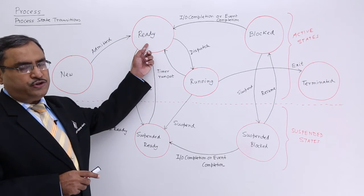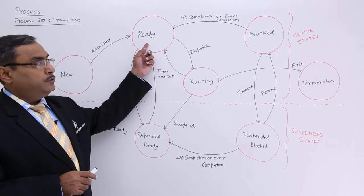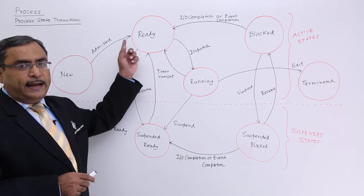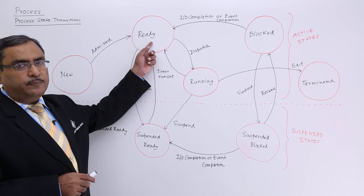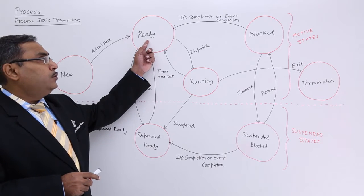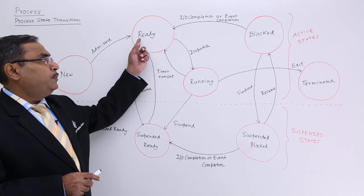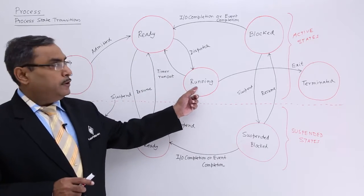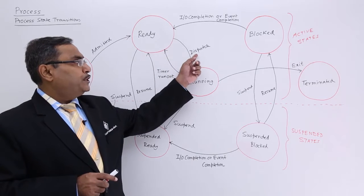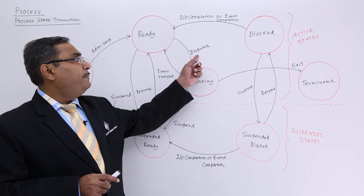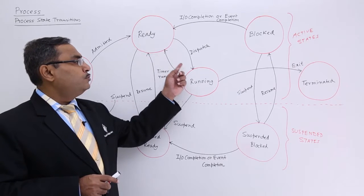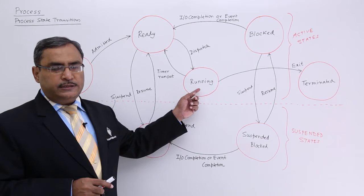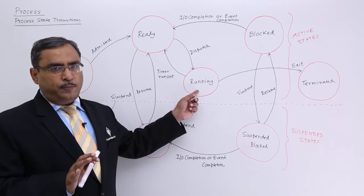The ready queue follows the queue data structure — first in, first out. When the process is at the front of the ready queue and the CPU becomes available, a dispatch operation will take place. This dispatch makes the process transition from the ready state to the running state, where the process will be executing.